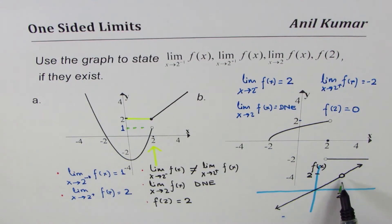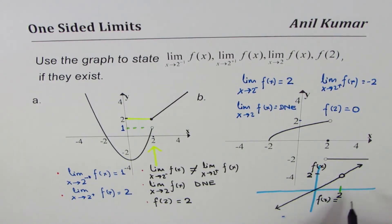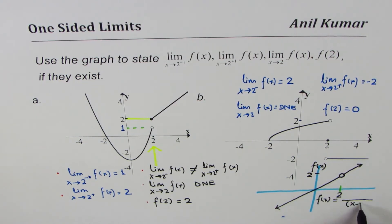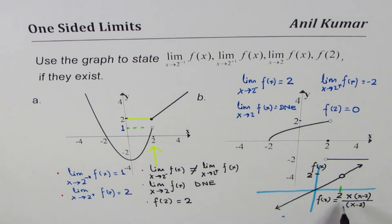If possible, provide an equation for this graph. To begin with, let me write down the equation — that's the most difficult part. Since there is a discontinuity at x equals 2, x minus 2 in the denominator can give us a discontinuity at 2. The same factor in the numerator gives us f of x equals x times (x minus 2) divided by (x minus 2). The (x minus 2) factors cancel, giving a hole at 2.